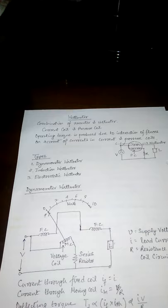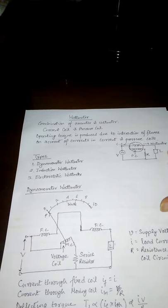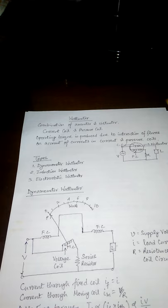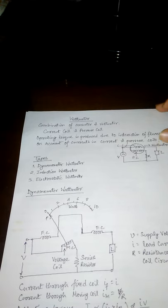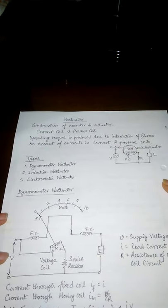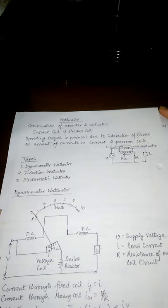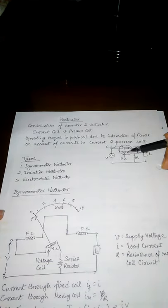We are going to discuss about the topic Wattmeter. We know that the Wattmeter is an instrument which is used to indicate and measure the power in electrical circuits. In a Wattmeter, considering the configurations, there are two types of coil: one is current coil (CC) and another is pressure coil or potential coil (PC).